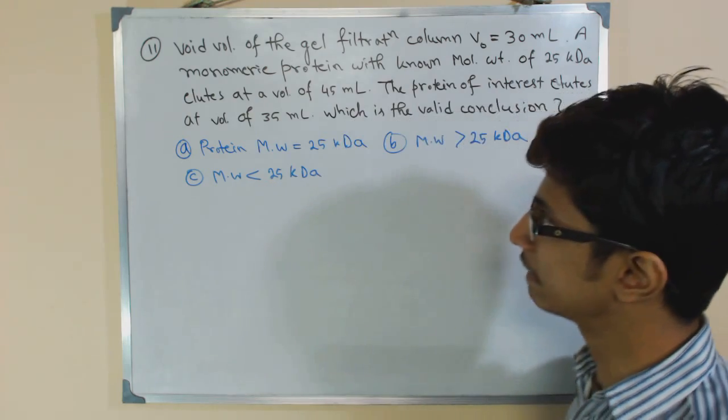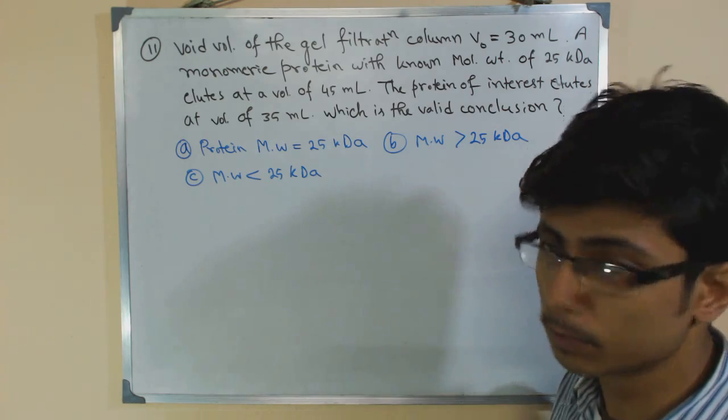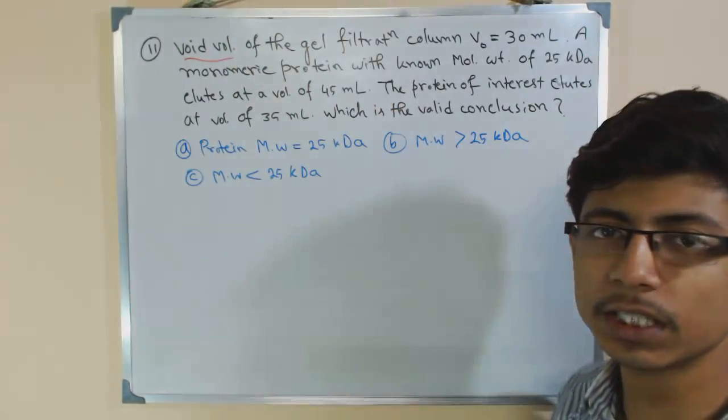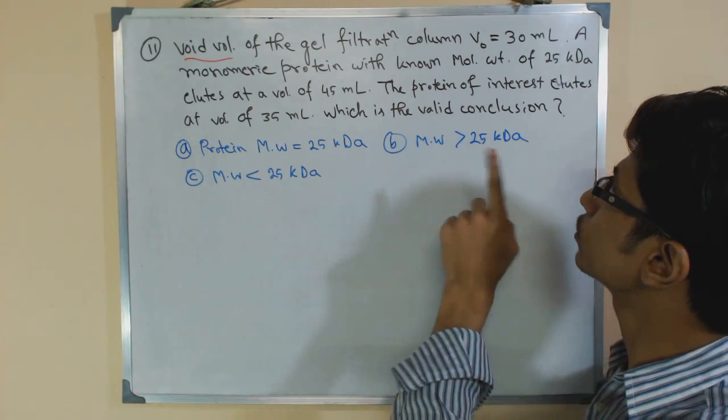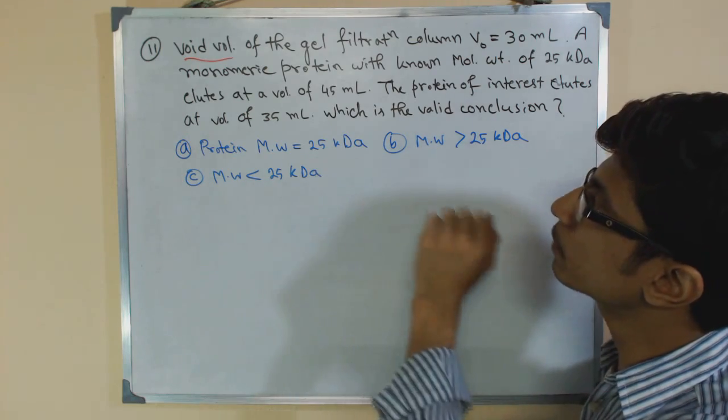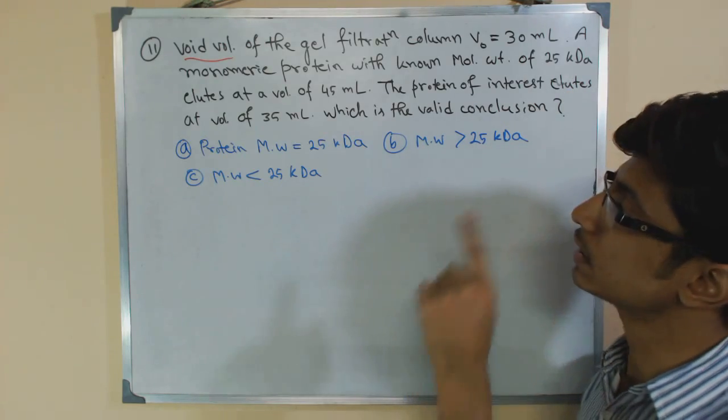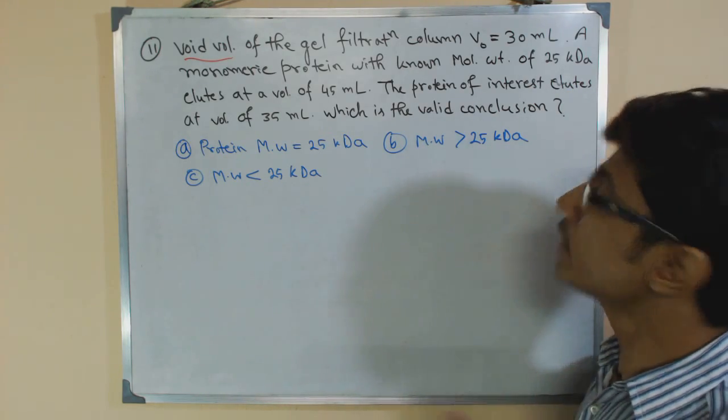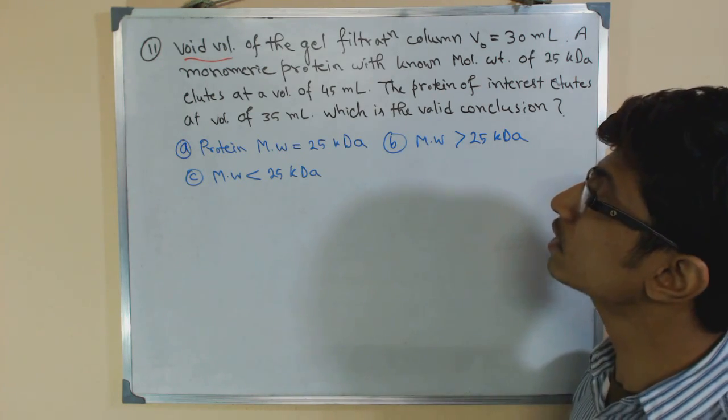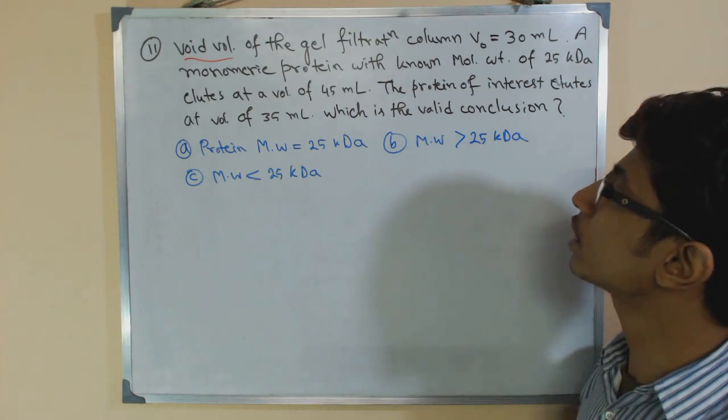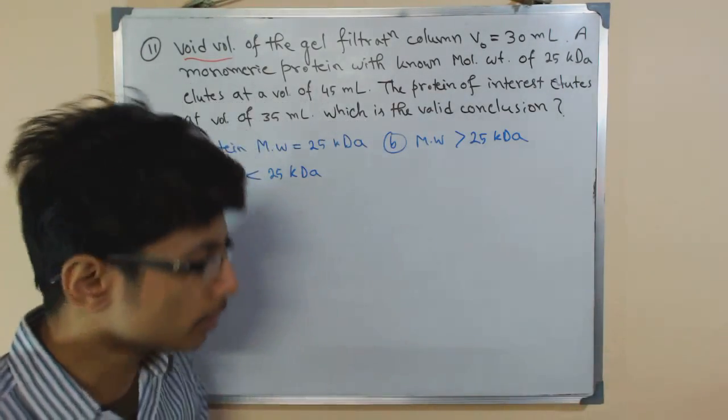Let's begin reading the question. The void volume of the gel filtration column V0 equals 30 milliliters. A monomeric protein with molecular weight of 25 kilodalton eludes at a volume of 45 mL. The protein of interest that you are trying to purify eludes at the volume of 35 mL. Which is the valid conclusion based on this input?